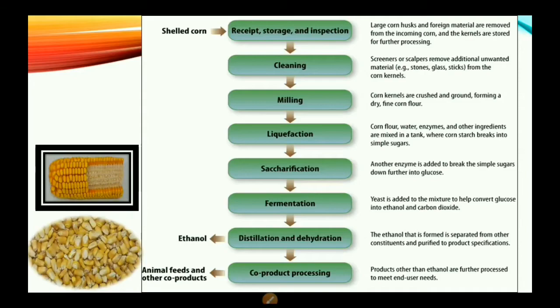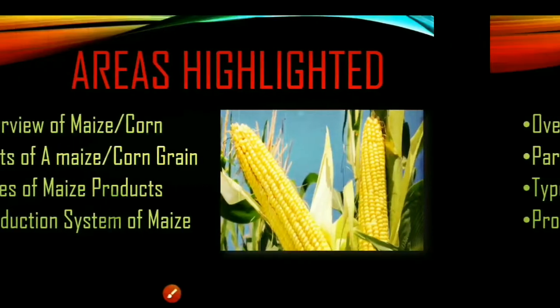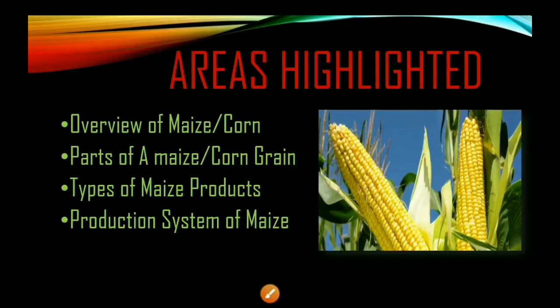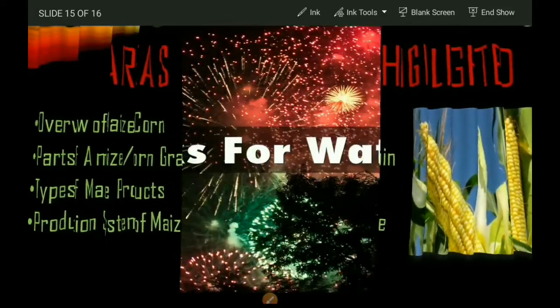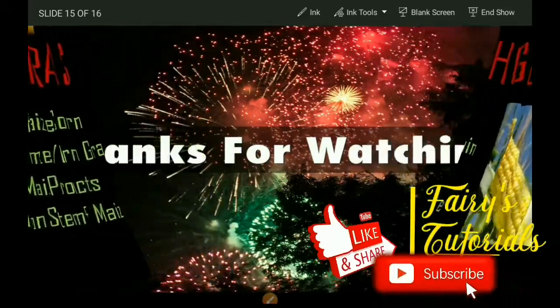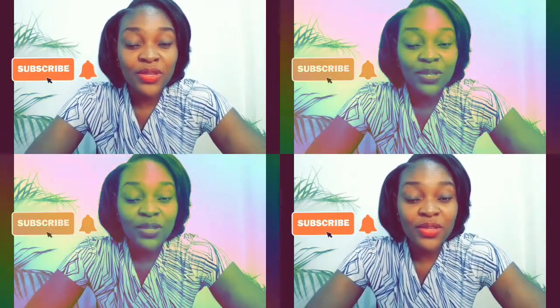The final stage in dry milling is co-product processing, where animal feeds and other co-products are produced. So we have two processes: dry milling and wet milling. Today we covered an overview of maize, the different parts of the maize grain, types of maize products, and the production system of maize. Don't forget to subscribe and share with anyone who will find this video useful. Thank you for watching Fairy's Tutorials.